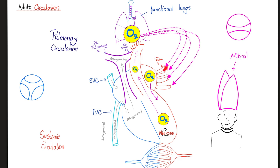From the pulmonary veins, oxygenated blood returns to the left atrium, which gives blood to the left ventricle through the mitral valve. When the mitral valve is open, the aortic valve is closed. Both atria contract at the same time; both ventricles contract at the same time. But the atria and ventricles do not contract together — we have to wait because of the AV nodal delay. When the ventricles contract, the mitral and tricuspid valves close to prevent backflow from ventricles to atria. When the ventricles relax, the aortic and pulmonic valves close to prevent backflow from the big arteries to the ventricles.